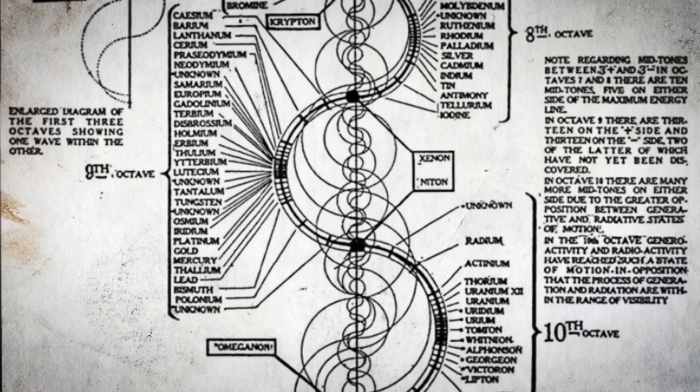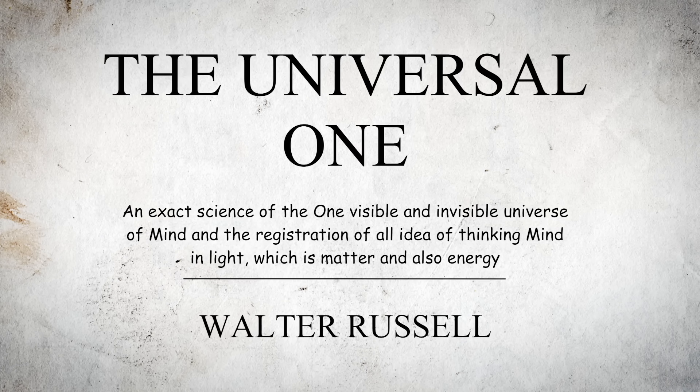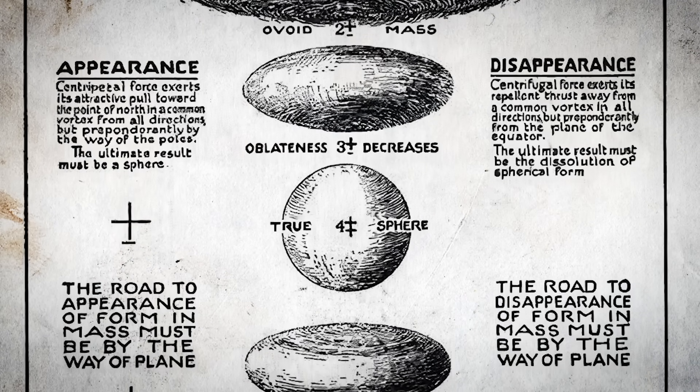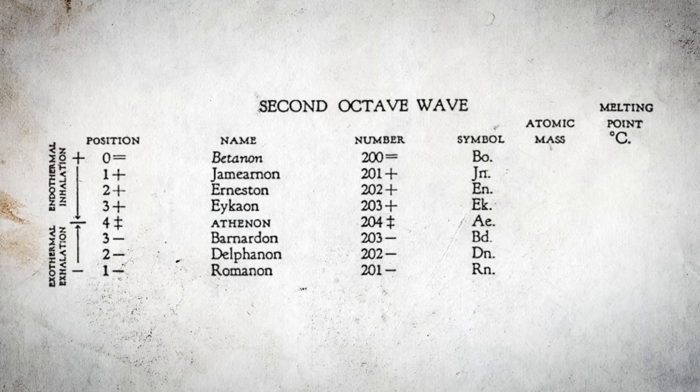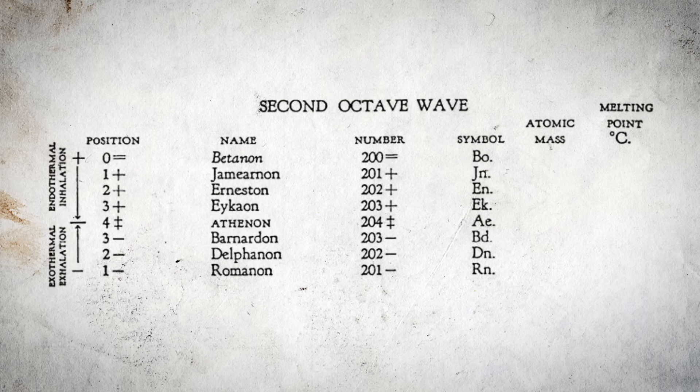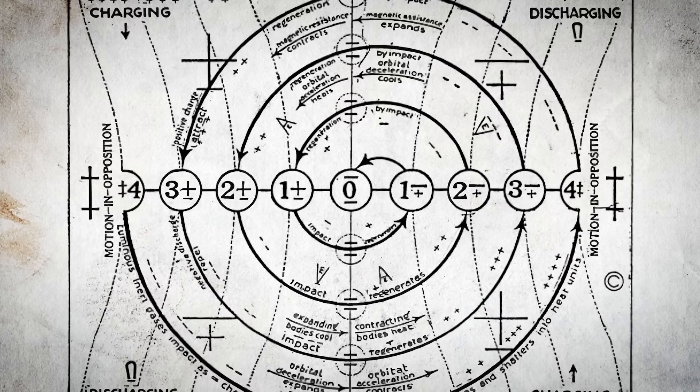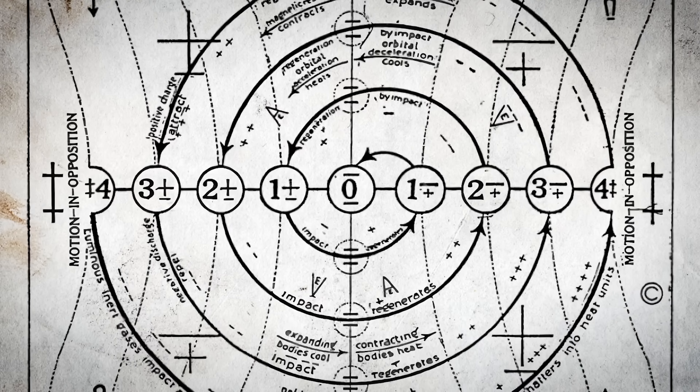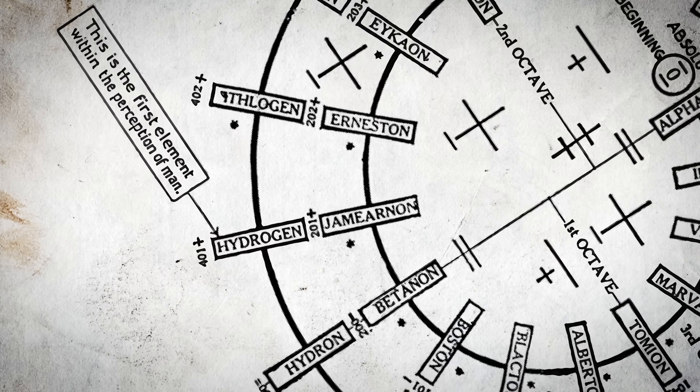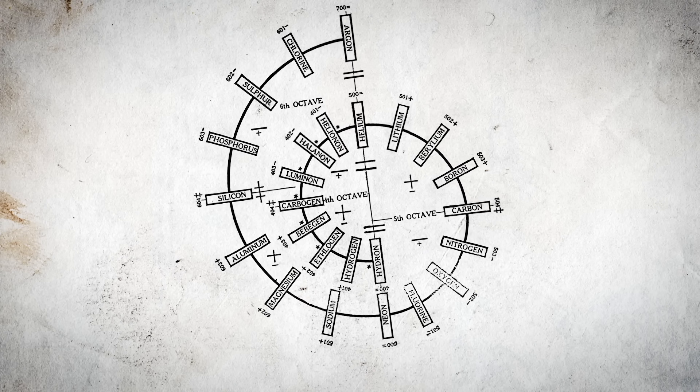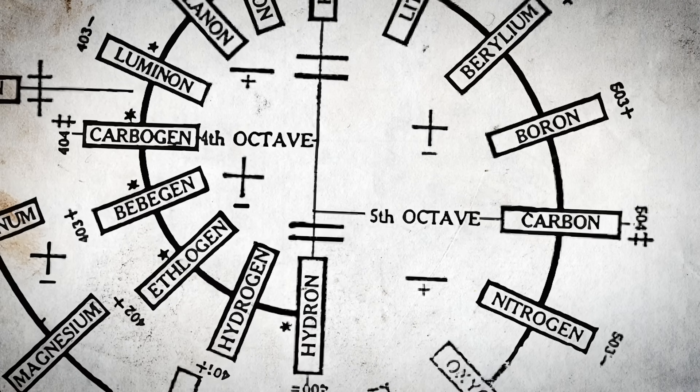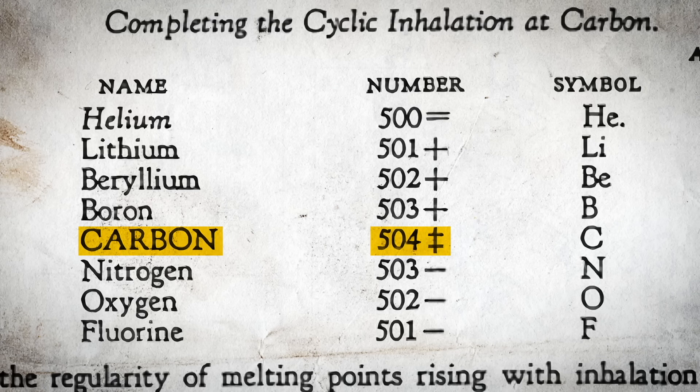Walter Russell's The Universal One presents a sophisticated model known as the 10-octave cycle of elements, which details the progression and transformation of matter across various energetic states. This cycle begins with the simplest forms of matter and progresses through stages of increasing complexity before ultimately returning to simplicity, albeit at a higher energetic state, reflecting a cyclical and eternal process of creation and dissolution. The cycle starts with elements in their most basic forms, akin to hydrogen, characterized by their simplicity and foundational properties. As the cycle progresses, elements evolve, becoming more complex and varied in their chemical and physical behaviors. By the time we reach the middle octaves, elements like carbon appear, marking a significant turning point.